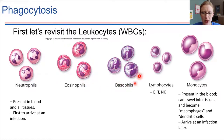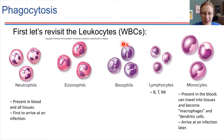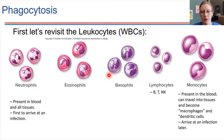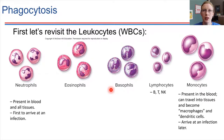The basophils — you can see another example of a granular white blood cell. These have granules inside, and what those granules are storing is histamine, for one thing. Basophils are cells that are important in initiating inflammation — they help facilitate inflammation to take place. We'll see those a little bit later.